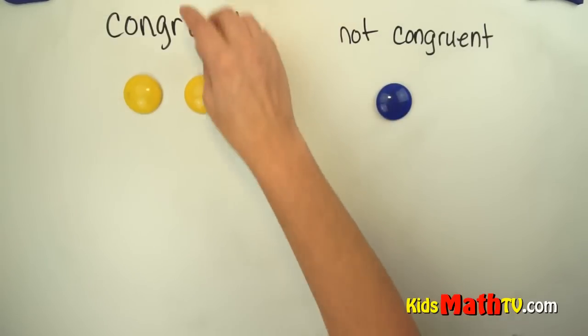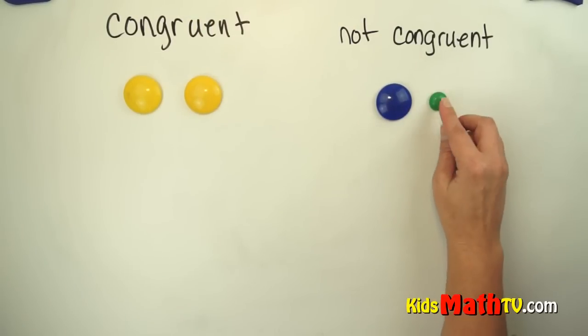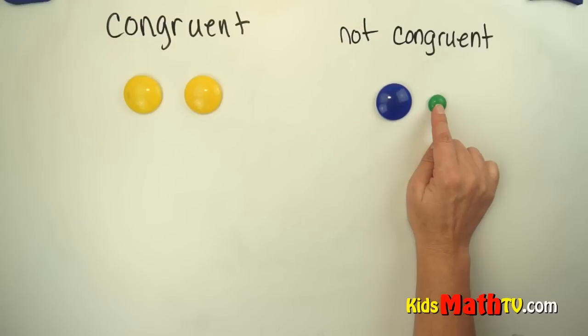This is not congruent. This is still a circle and that is a circle. It is the same shape but it is not the same size. These are not congruent.